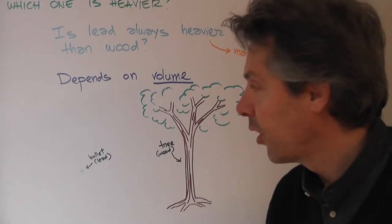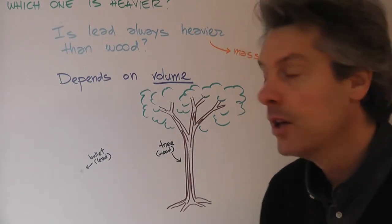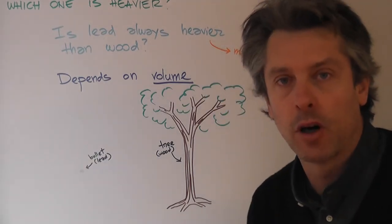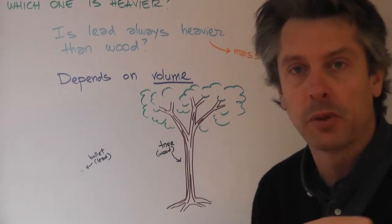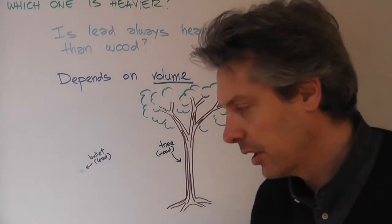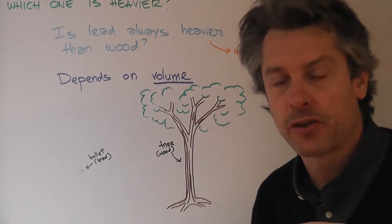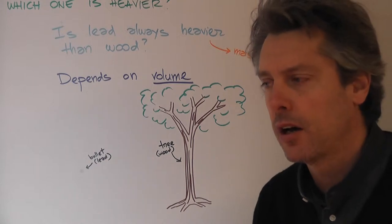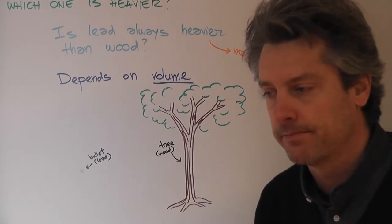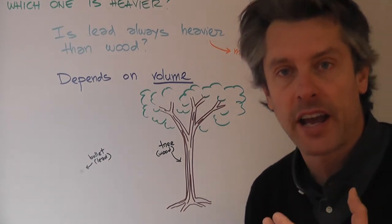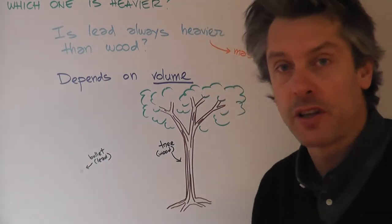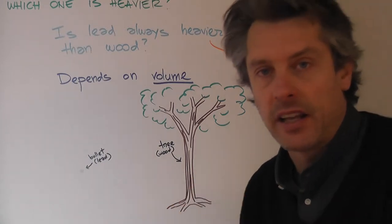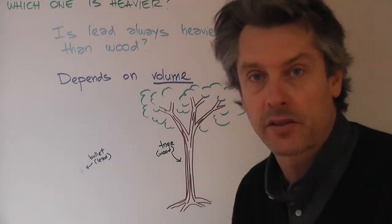First of all, remember when we talk about heavy we're referring to a quantity known as mass. Later on we'll discuss what's the difference between mass and weight. It's not always true that an object made of metal, something we usually link to something very heavy, is always more massive than an object made of wood, ice, or water.